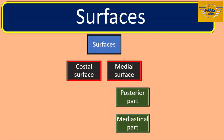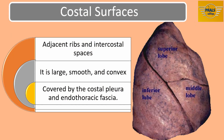For the surfaces, there are two: the costal surface and the medial surface. The medial surface has two parts, the posterior part and the mediastinal part. The costal surface lies adjacent to the ribs and intercostal spaces of the thoracic wall. It is large, smooth, and convex, and is covered by the costal pleura and the endothoracic fascia.